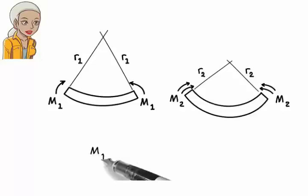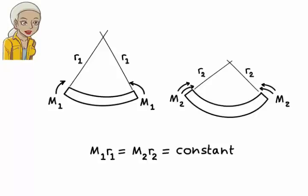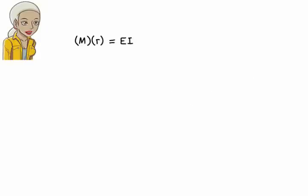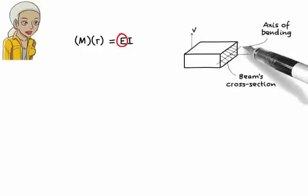So, it should come as no surprise that the product of the bending moment, m, and r remains constant in a beam segment. This constant value can be determined based on the geometry of the cross section of the segment and the beam's material type. More specifically, m times r equals e times i.